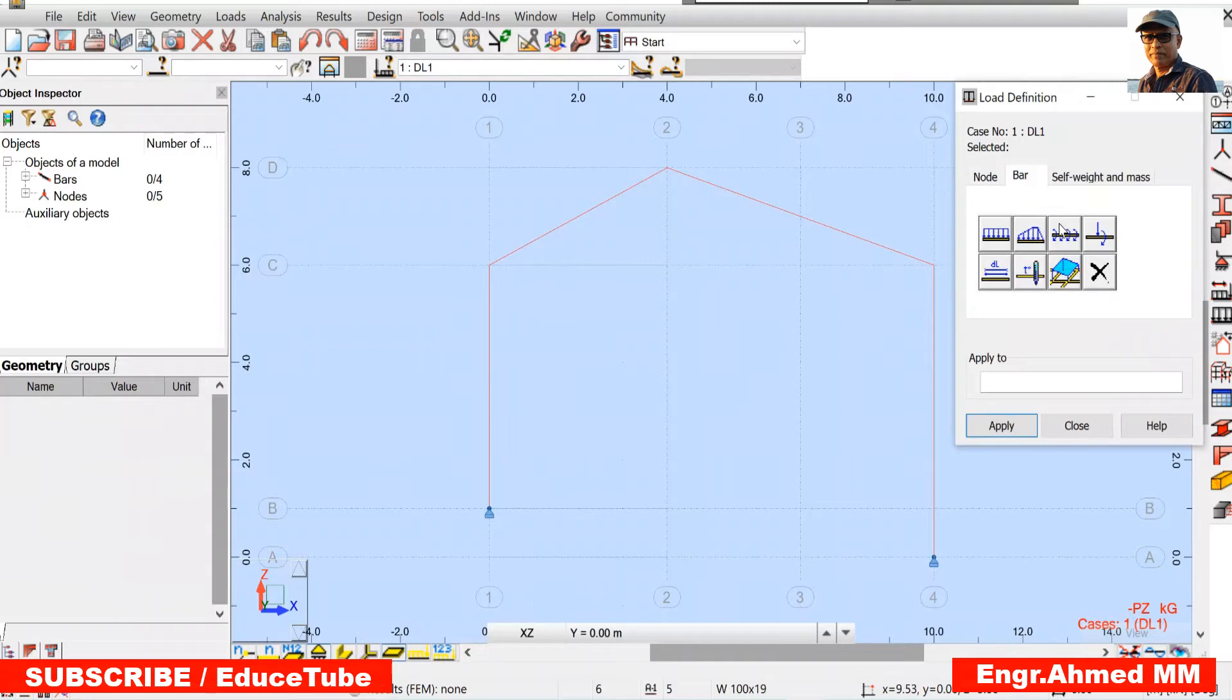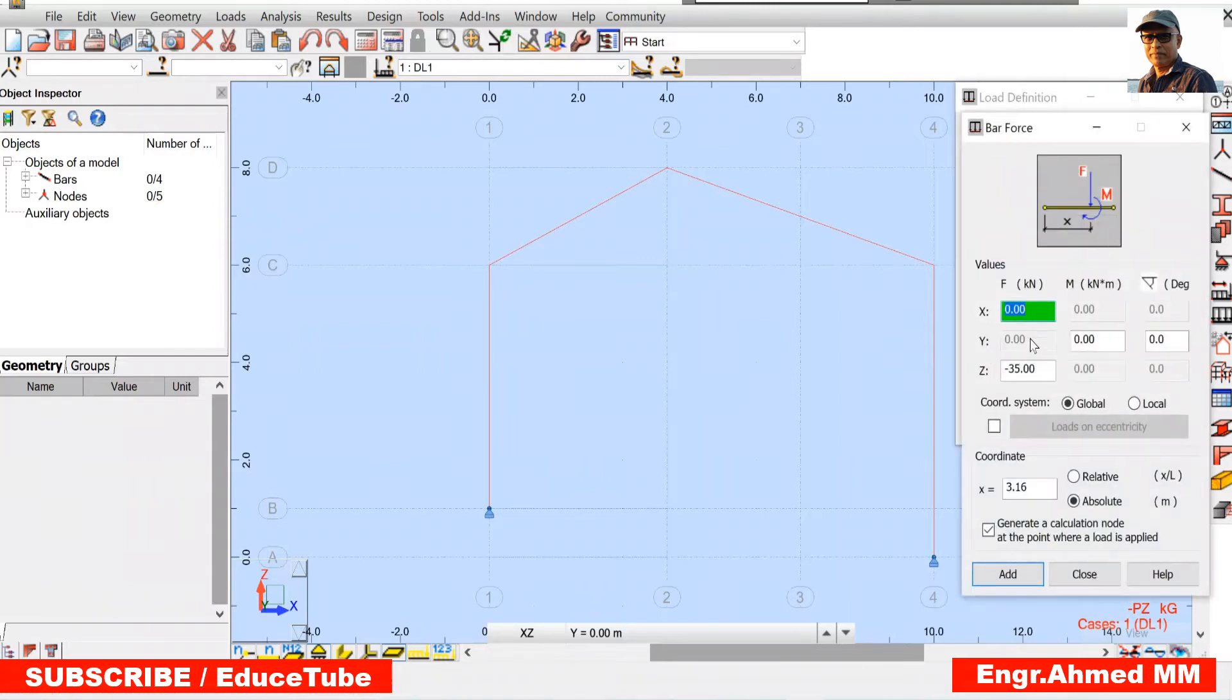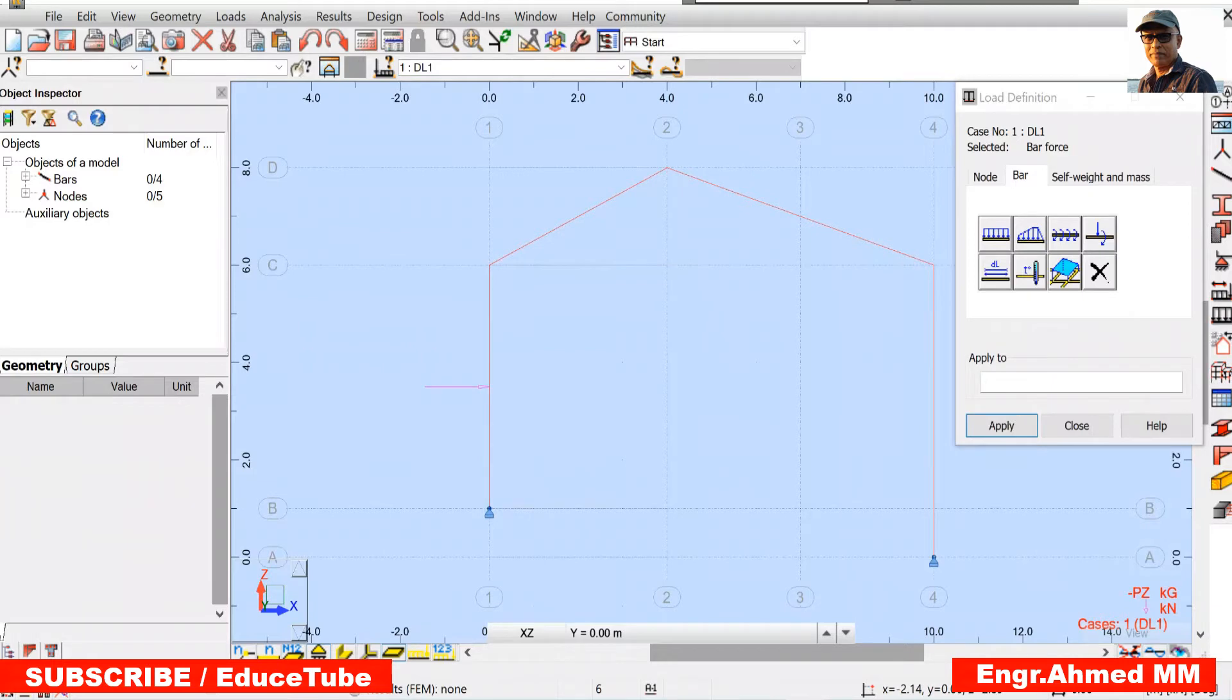So what we will do? We will go bar, here, on x-axis. We will provide 12. Here there will be nothing. So 12. But this 12 will act at the midpoint. This is 5 meters, so it will be here 2.5. Make sure this is absolute, this is global. 12, add it. Click here, you got the loads.